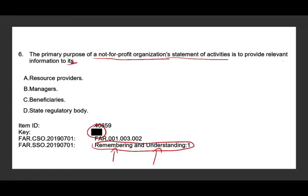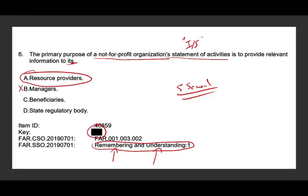Simply put, the statement of activities is the income statement of not-for-profit. Who are they providing information to? This is a five-second answer. We're providing answers to whoever finances us, whoever gives us resources — and those are the resource providers, not managers. The statement of activities is not designed to give relevant information to the managers; it's designed to give relevant information about the managers, but not to them. And not to the beneficiaries — they are the people that receive the benefit, but that's not who we target. We target the people that give us the money, the resource providers.